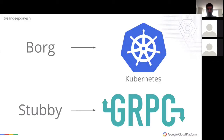Then we have the second part, which is gRPC. gRPC is a little bit newer and a little less well known. It's the open sourcing of a system internally called Stubby. It's very much like Stubby internally, except it uses newer technologies like protobuf version three, which I'll get into in a second.